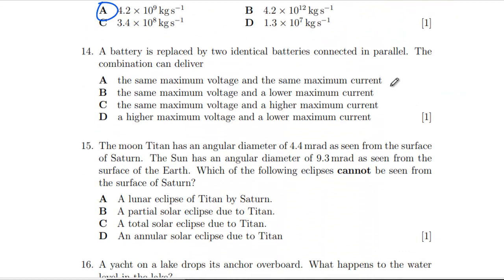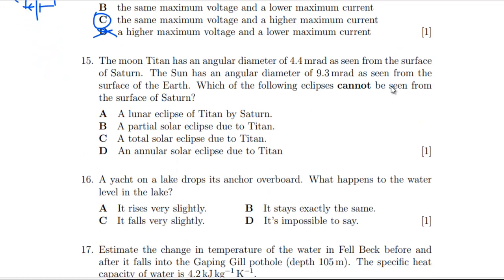Question 14: A battery is replaced by two identical batteries connected in parallel. What can this combination deliver? We've got the same battery. I suppose I've drawn cells, but it's the same thing really. What's happening to the voltage and the current? The EMF hasn't changed here. We've still got the same potential difference going across each one of these cells, so that hasn't changed. But the current, each one of these is pushing the same current, so we're going to have double the current once they've joined together with Kirchhoff's law. We want higher current and the same voltage, which is C.